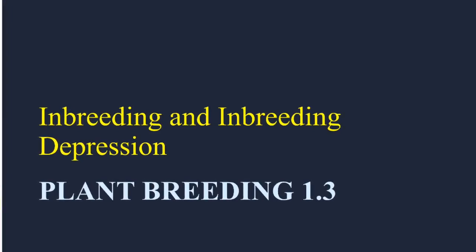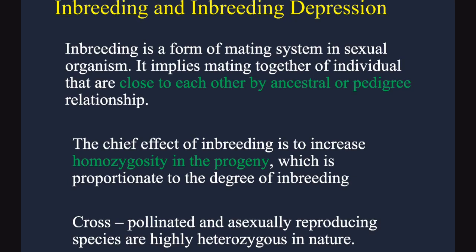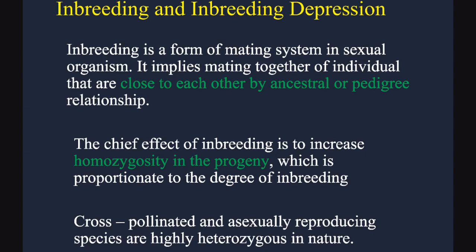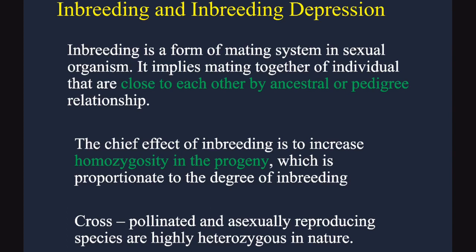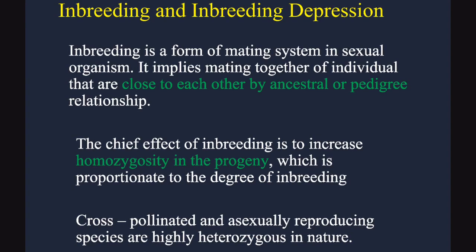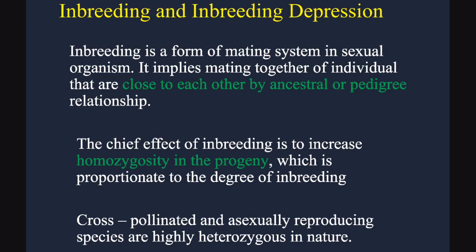So first, you just need to know what is inbreeding. As the name itself suggests, breeding takes place inside a family — that is called inbreeding. All the marriages that take place within your family come under the term inbreeding. Similarly in plants, it is a form of mating system in sexual organisms by mating together individuals that are very close to each other by either ancestral or pedigree relationship.